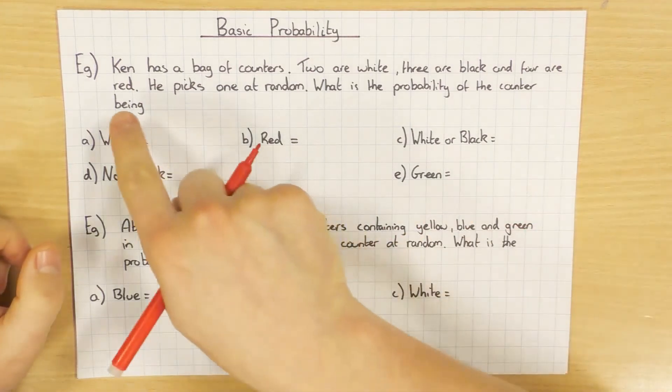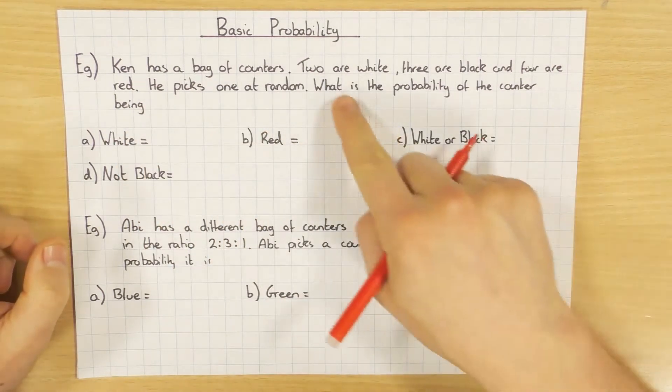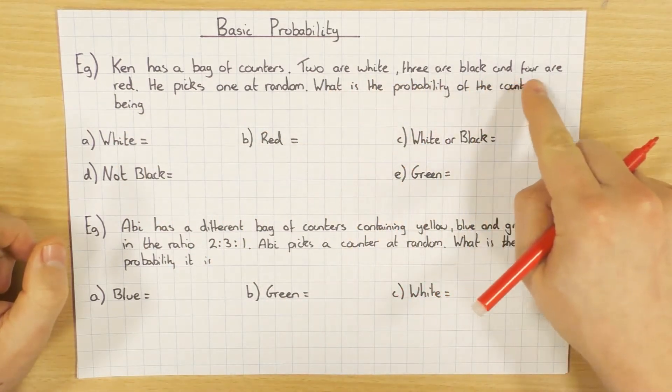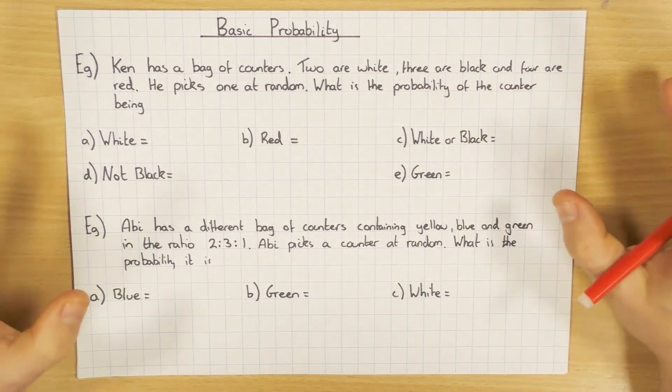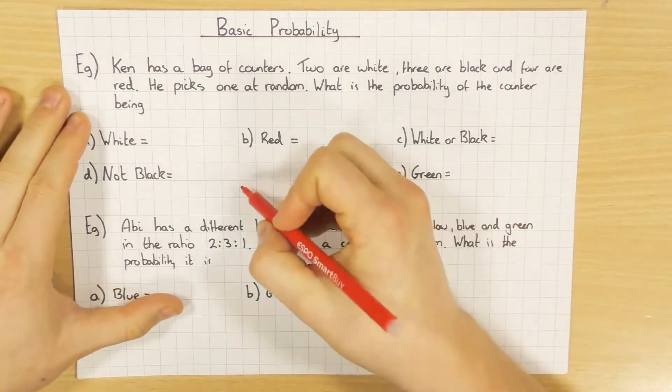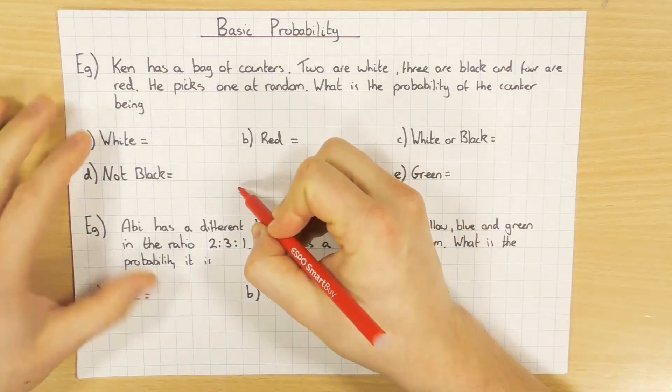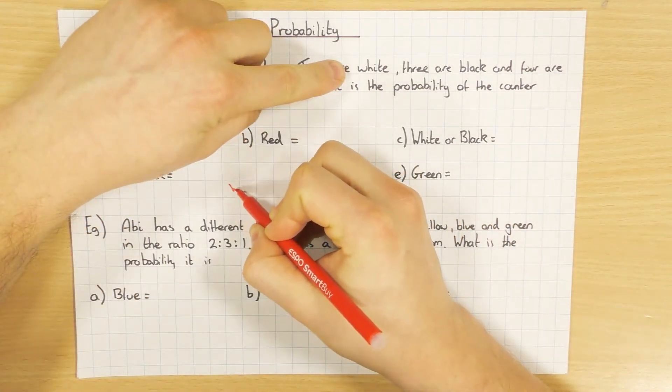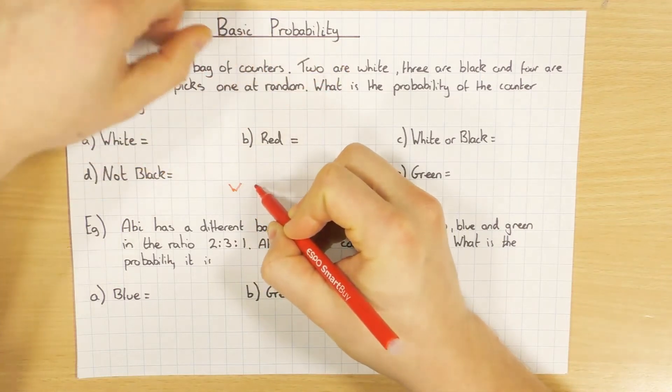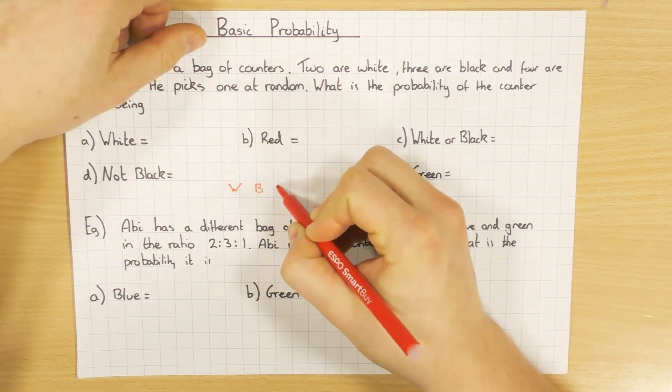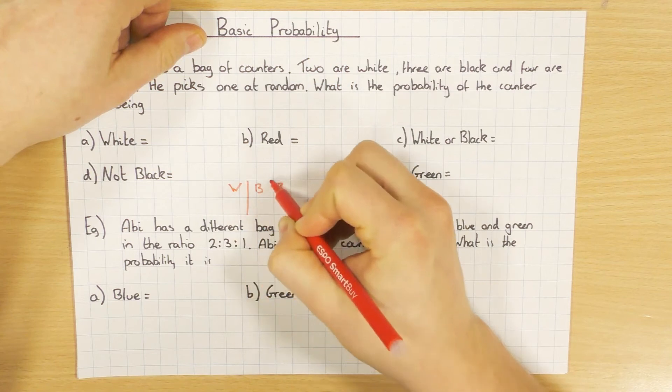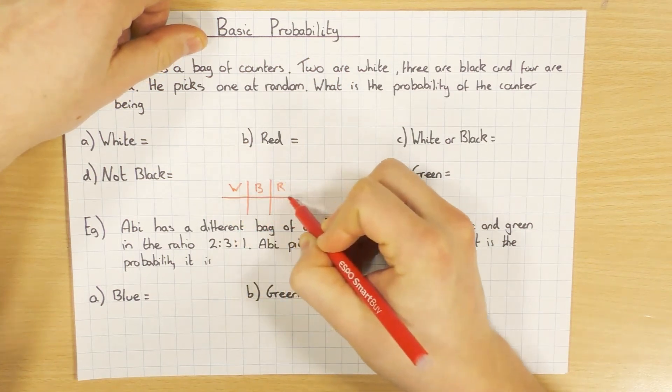So in the first example here, Ken has a bag of counters. Two are white, three are black, and four are red. So the first thing I would do here is draw myself a little table to help me. I've got white counters, I've got black, and I've got red. So I'm going to draw myself a little table, like so.